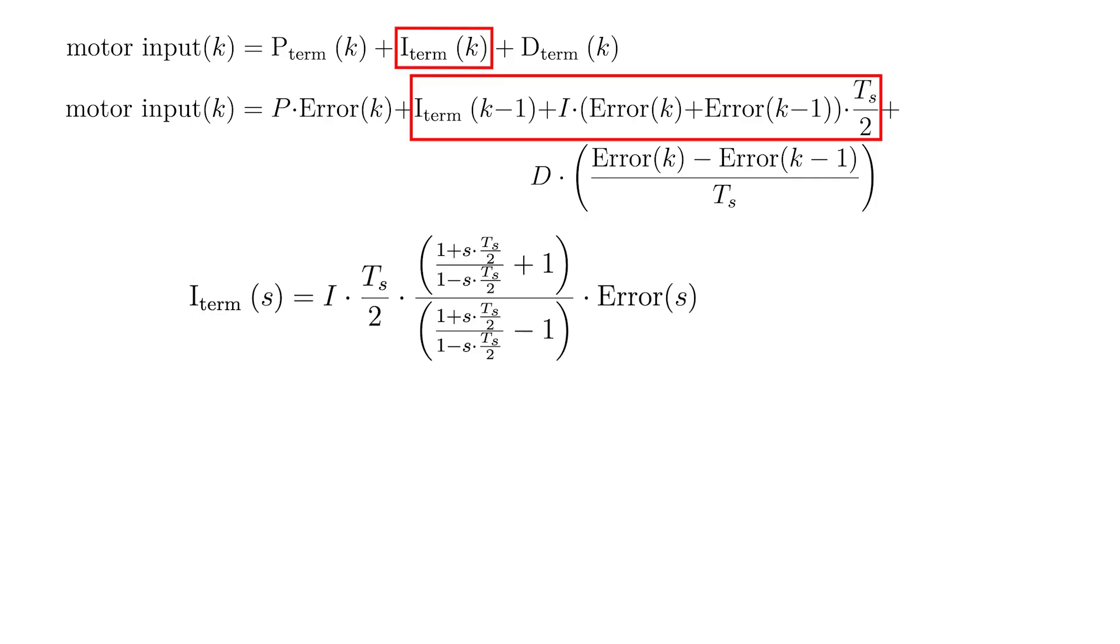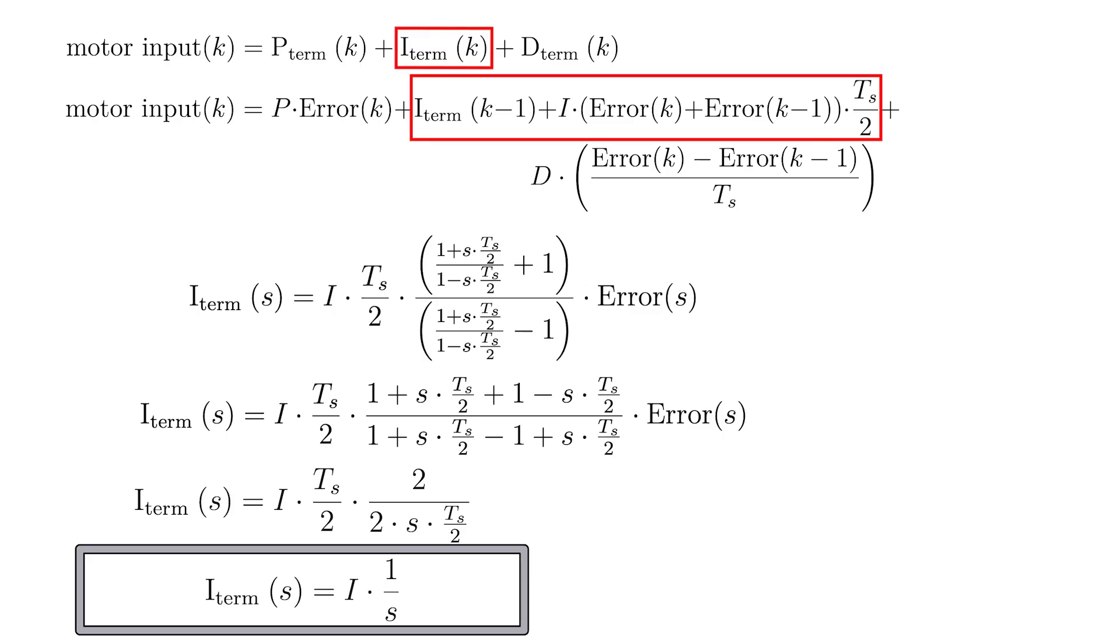By rewriting this equation, it can be simplified enormously, until you obtain a very simple transfer function. The transfer function of the I term is simply equal to the constant I divided by the complex variable s.